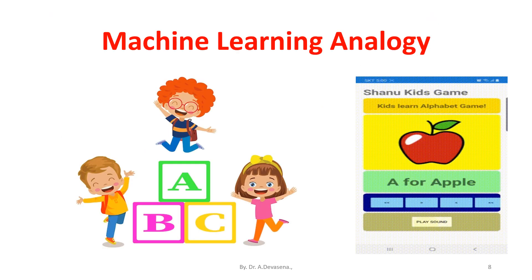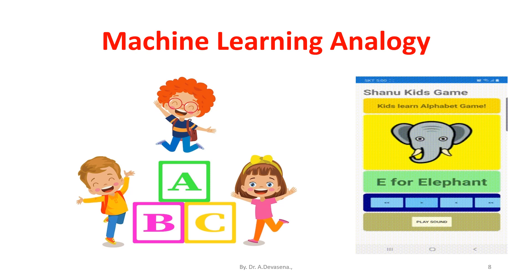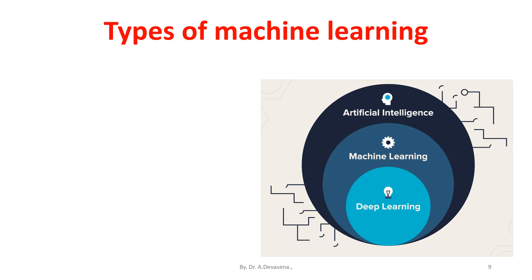Let us start discussing the analogy for machine learning. Consider a child. The child wants to learn alphabets. There are two possible ways: one is the child may learn by himself or herself, or under the guidance of the teacher. The same thing is applicable for machine learning also. Let us see how machine learning is done with the help of the types of machine learning.